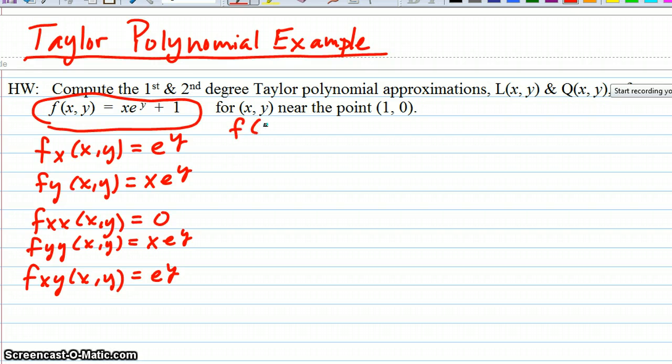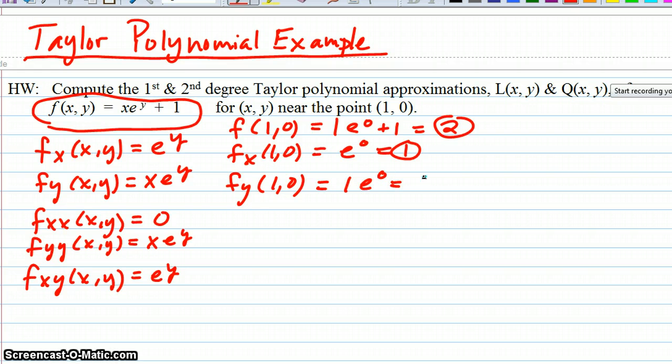So we'd have f evaluated at (1,0), which plugging in (1,0) into our original function would give us 1 times e to the 0 plus 1, e to the 0 is 1, so we get 2 out of that. Then we go ahead and evaluate f sub x at (1,0). That's going to be e to the 0 or 1. F sub y at (1,0) will be 1 times e to the 0 or 1.